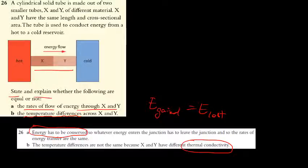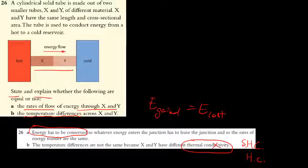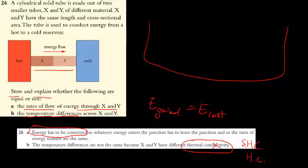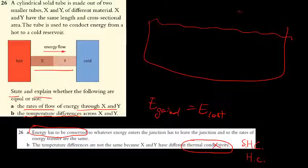The temperature difference differs because X and Y have different heat capacities. Think of an extreme case: a very hot metal dropped into an ocean. The ocean has a specific heat capacity of about 4200 J/(kg·°C), so the sea water barely changes temperature while the metal quickly cools to the sea water temperature. This illustrates why temperature difference is not the same across different materials.